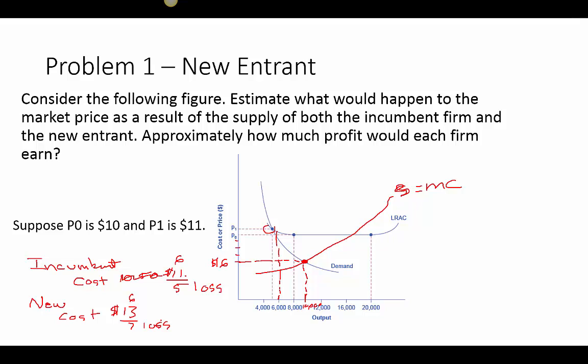What's going to happen is the new entrant will fail — they won't be able to sustain these losses. The incumbent can sustain losses longer because their loss is smaller. Eventually the new entrant drops out, ceases to exist, and then the incumbent produces at their level, the price rises again, and they make a profit.